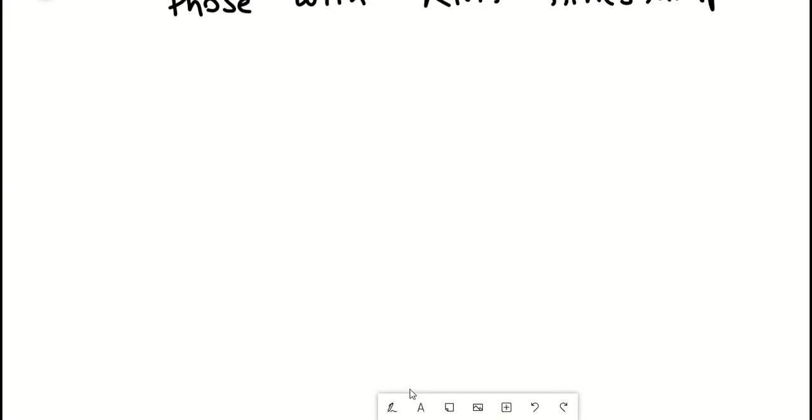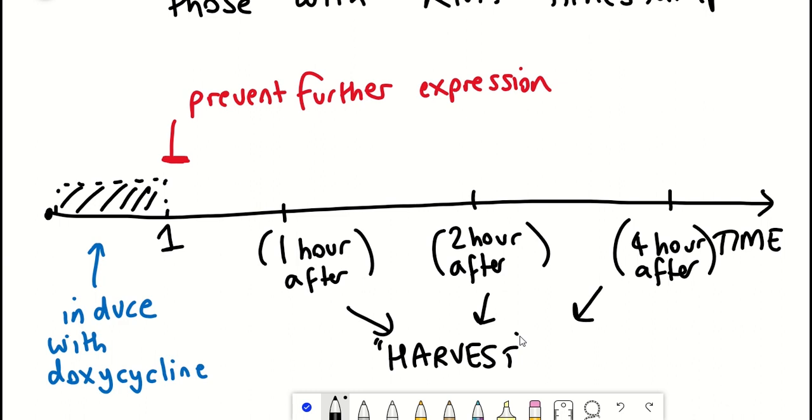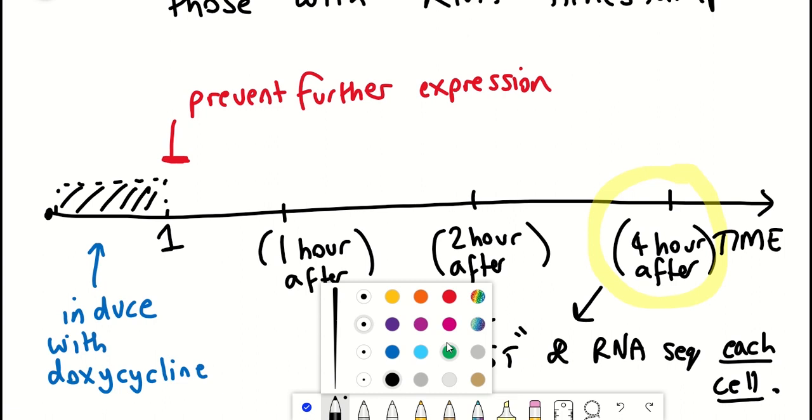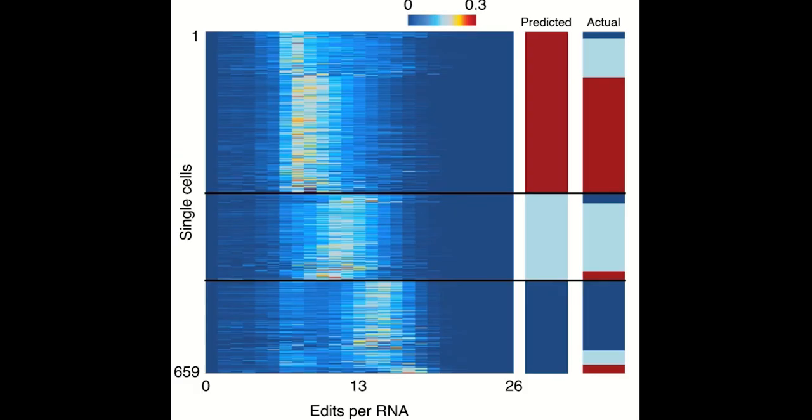So using a similar method to what I explained earlier, they added doxycycline to the cells to induce expression of the timestamped RNA for one hour, and then either one hour, two hour, or four hours following this offense, they then harvested and sequenced the RNA. And so based on their models, timestamps that have more inosine present are more likely to come from cells harvested after the four-hour time period, because they've had a greater time to accumulate those adenosine to inosine mutations induced by ADAR. And so as you can see in this figure here, for each of the single cells, they predicted what time points the cells came from.